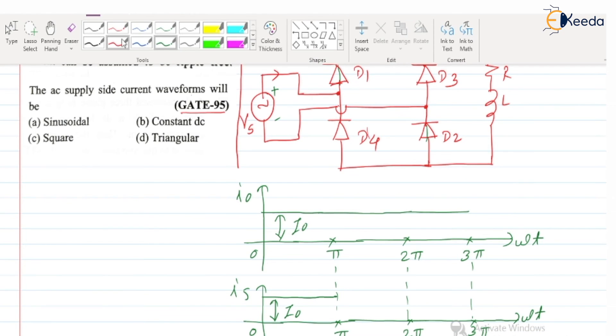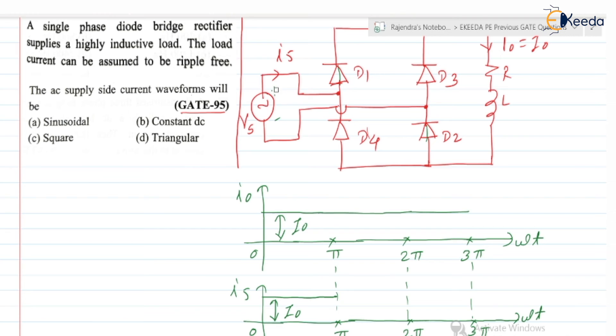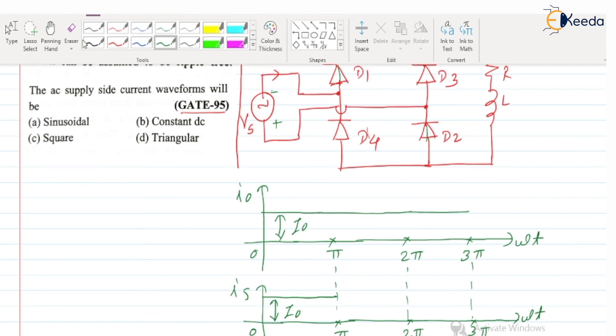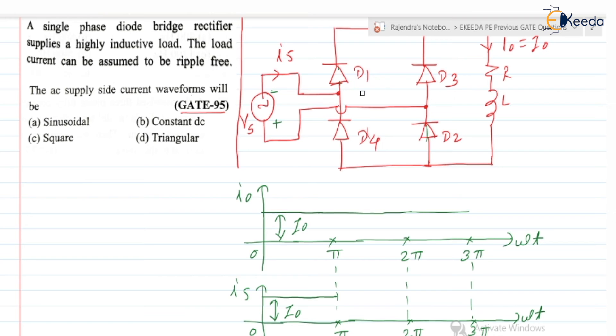After pi, what will happen? The supply voltage polarity is reversed. Supply voltage is reversed means what? Yes, the lower terminal positive, upper terminal negative, and diode D1, D2 will be in the off state. After pi, D1, D2 will be in the reverse bias mode.